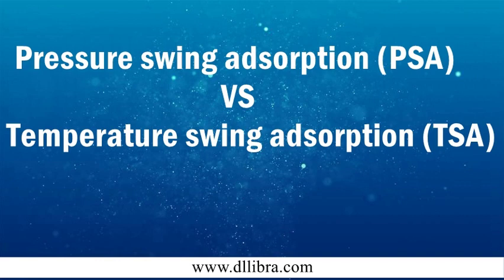What is TSA? Temperature swing adsorption (TSA) is a separation process in which gas components are adsorbed at a lower temperature and desorbed at a higher temperature in the adsorption bed. The adsorption isotherms at different temperatures reveal the law of adsorbate adsorption on the adsorbent with the rise and fall of temperature. Using this law, the separation of specific components is accomplished by the temperature swing process of low-temperature adsorption and high-temperature desorption.